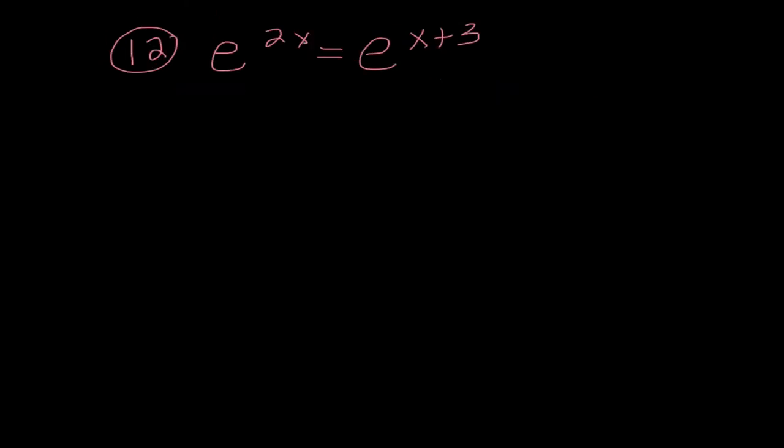Last problem I promised here. I wanted to look at this because often we try and make the easier problems more difficult than they need to be. If we look at this, E to the 2X equals E to the X plus 3. The thing that jumps out at me right away is we have the same base. So, that means my exponents are equal to each other. So, when I subtract X from both sides, I get X equals 3 and we are done.